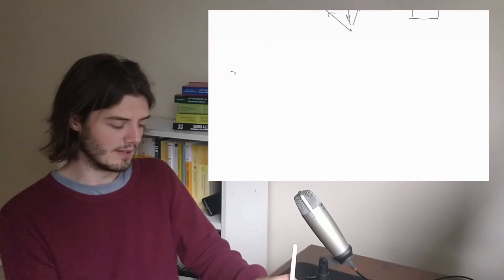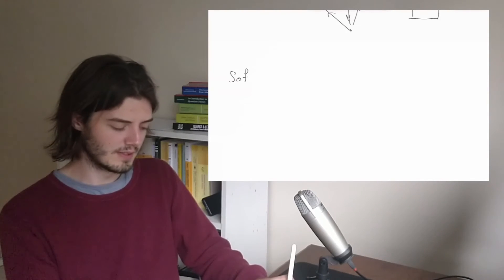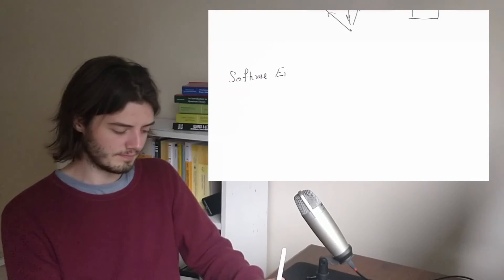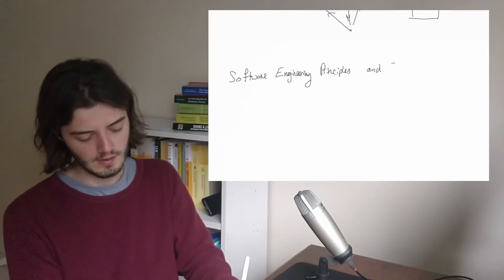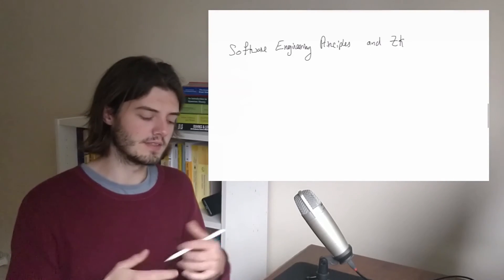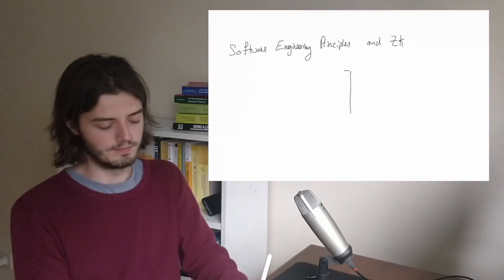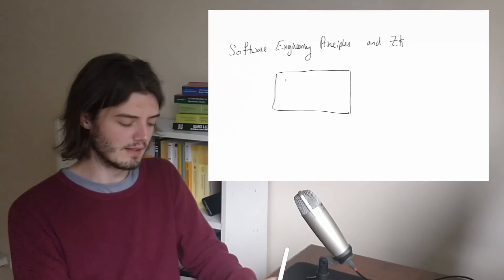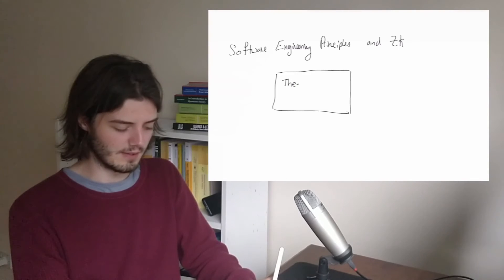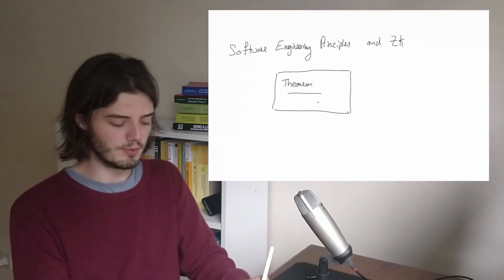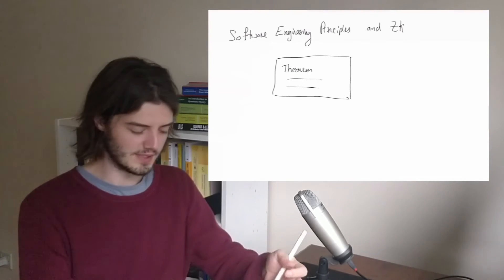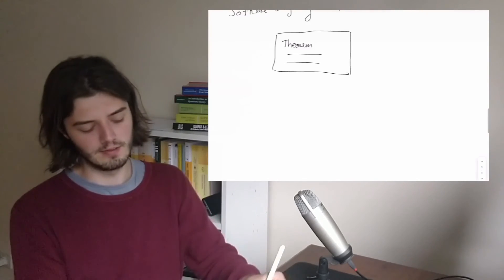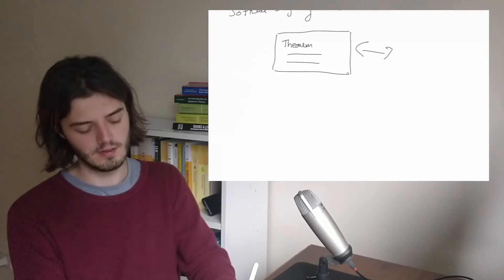Finally, I'm going to talk about software engineering principles and the Zettelkasten. As I've said, each of my notes is basically one key idea, so say a theorem with its proof or whatever. I imagine these theorems or propositions, each in their own note, as kind of like functions in software.